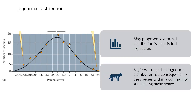When looking at the lognormal distribution, you might wonder why it happens. Robert May proposed that the lognormal distribution is statistically expected because it is more difficult to find certain species — essentially a sampling effect. Sugihara argued that the lognormal distribution is a consequence of the way species partition the habitat, and that it is based on biotic interaction as opposed to statistical expectation. So there are different views on the reasoning behind this curve and why it appears in nature.